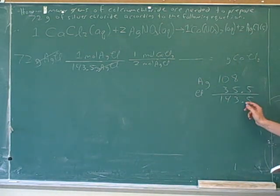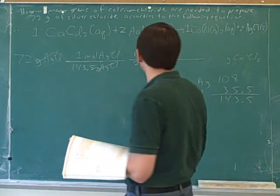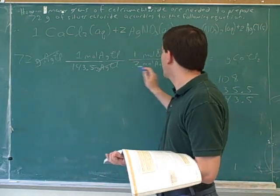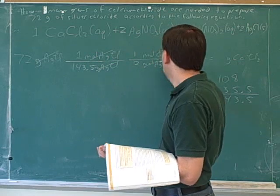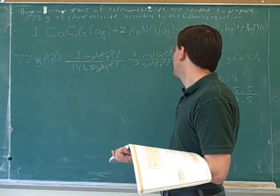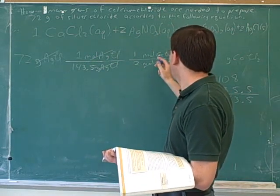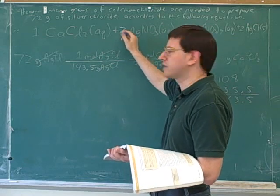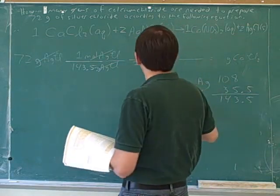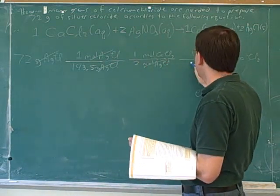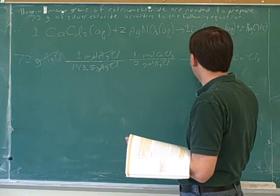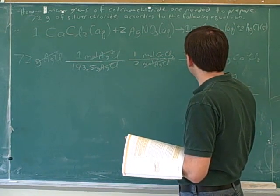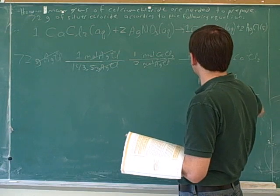My advice is to do those calculations on paper, so I've got that written down. Now we have to get rid of the moles of silver chloride, so it goes on the bottom. And now we can start talking about calcium chloride — these coefficients come from the balanced equation, that's why we had to balance this. We need to get rid of the moles of calcium chloride and replace that with grams of calcium chloride.